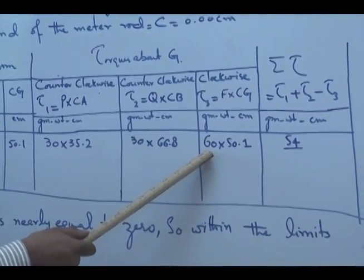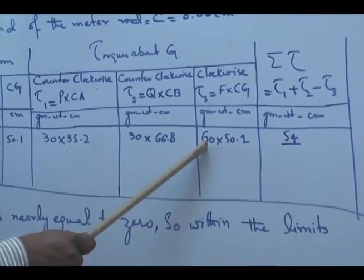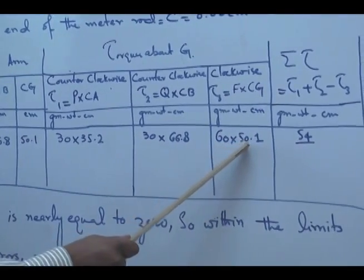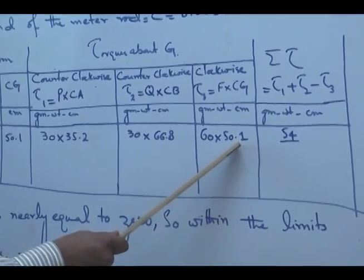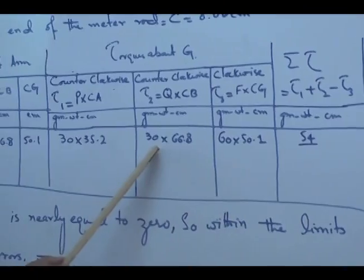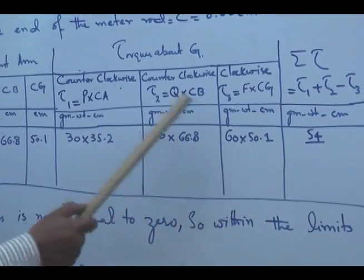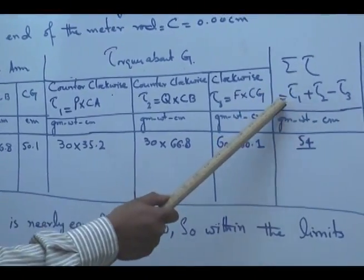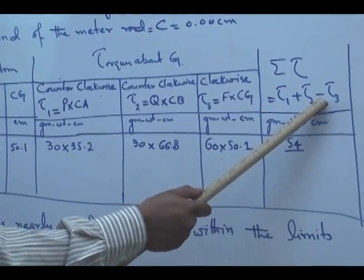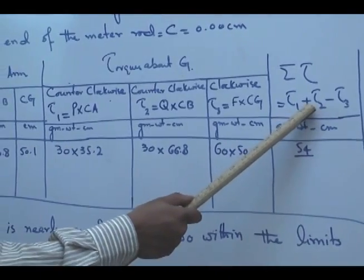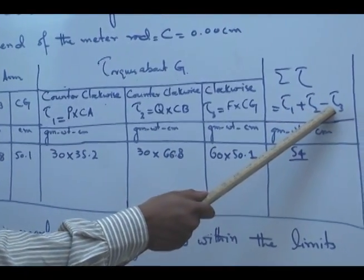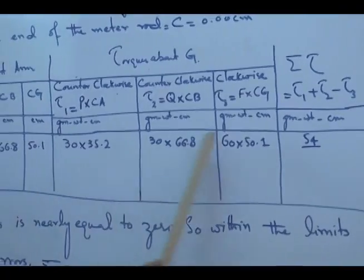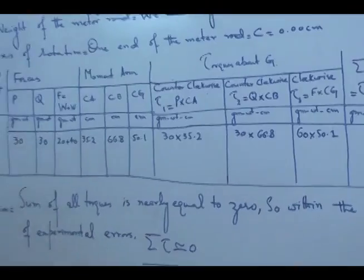Torque T3 equals 60 into 50.1, where 60 is the sum of the two weights — the weight of the meter rod plus the external weight — and 50.1 is the position of the center of gravity. So the sum of the two counterclockwise torques must equal this clockwise torque, or by summation: sigma torque equals T1 plus T2 minus T3. These two torques are anticlockwise and this torque is clockwise, so their sum is nearly equal to zero. This is our first observation.